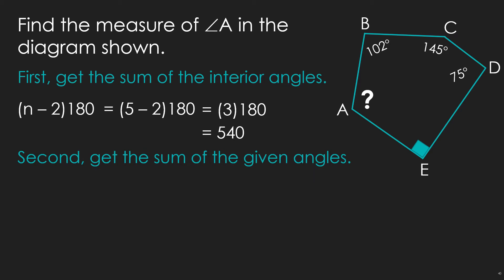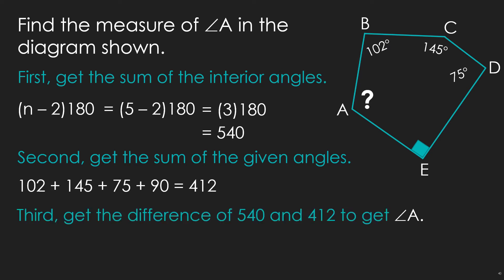Now, let's get the sum of the given angles, and that will be 412. So you have here 102 plus 145 plus 75 plus 90, and that would be 412. Now, if the sum of the 4 angles is 412, this means that whatever is left from the 540 is the measure of angle A. Thus, the third step is to get the difference of 540 and 412, and that is 128 degrees. Therefore, the measure of angle A is 128 degrees.